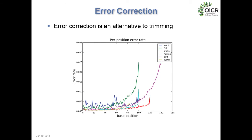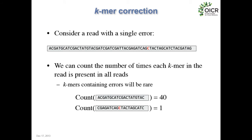As an alternative or addition to quality-based trimming, you can perform error correction. The Illumina sequencing error profile for six different datasets shows that the error rate is low at the first base but goes up towards the end of the read. If we leave this data uncorrected, it causes problems in the graph — sequencing errors create new sequences that contribute new structures and branches to the graph. Error correction takes our sequencing reads and tries to infer which positions are wrong and sets them to the right bases.